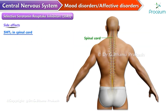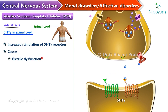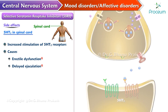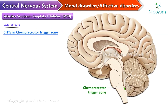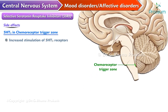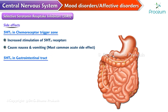The 5-HT2 receptors in the spinal cord: increased stimulation of 5-HT2 receptors in the spinal cord causes erectile dysfunction and delayed ejaculation. Hence SSRIs are used off-label for the treatment of premature ejaculation. These effects are maximum with paroxetine and are the most common long-term side effects with this drug. The 5-HT3 receptor in the chemoreceptor trigger zone, located in the area postrema, causes increased stimulation of 5-HT3 resulting in nausea and vomiting, which is by far the most common acute side effect of SSRIs, followed by anxiety. The 5-HT4 receptors in the GIT increase contraction and cause loose stools.